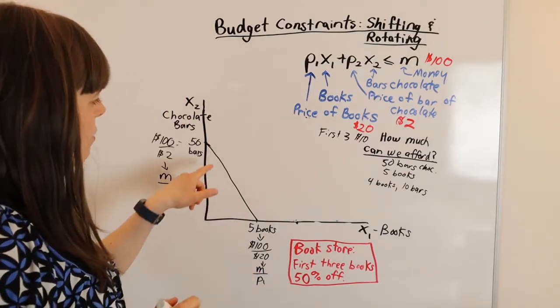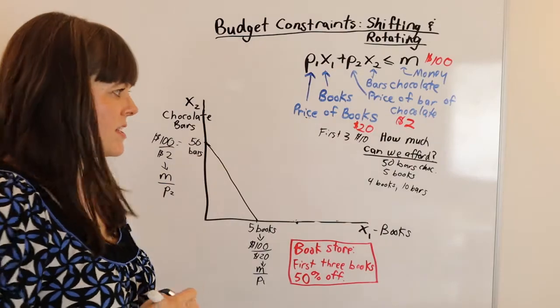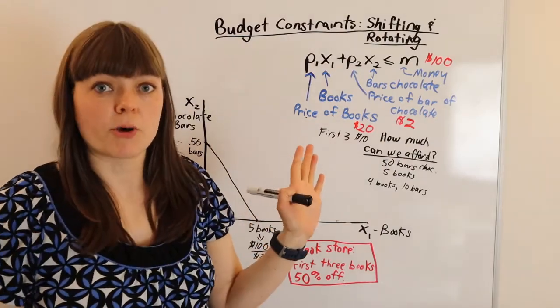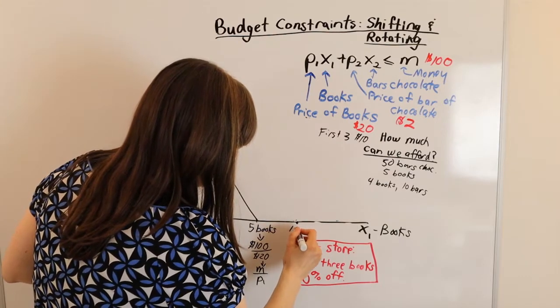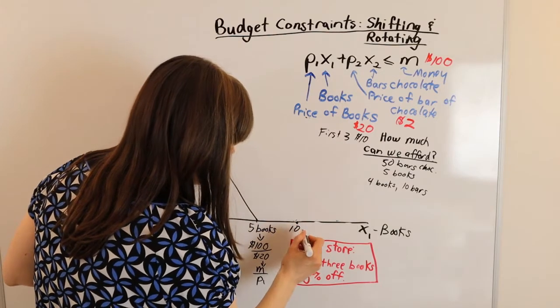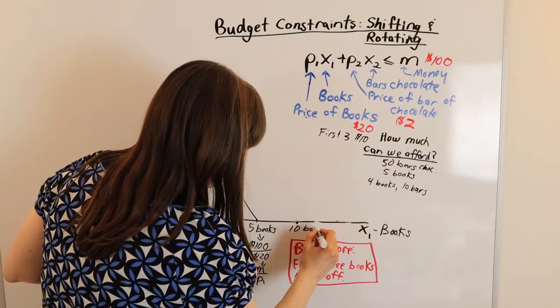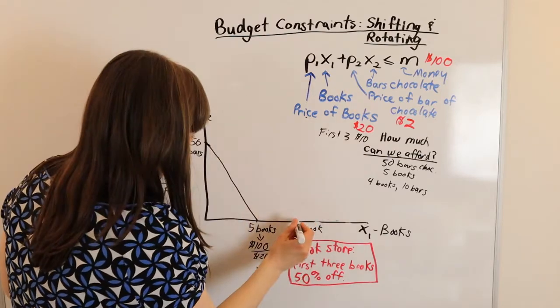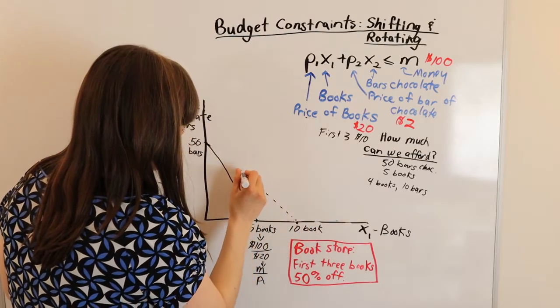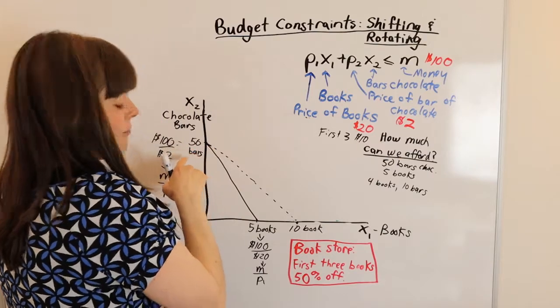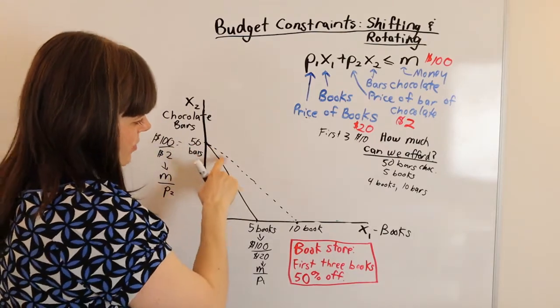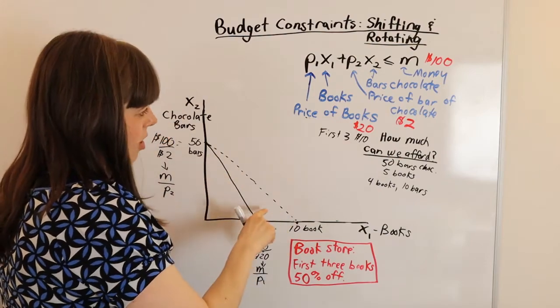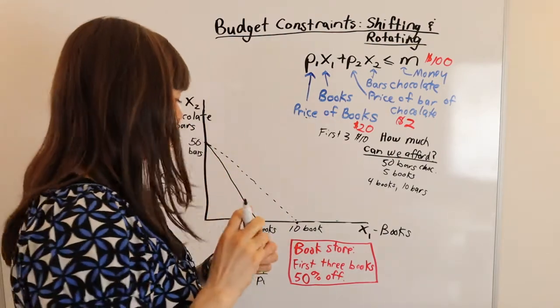Well, we've already done the budget constraint if every single book was $10. We remember that. In that case, we had an intercept over at 10 books. And I'm going to make this a dotted line budget constraint. And our intercept for chocolate bars was still at 50. So this was the case when all of our books were purchasable at $10.